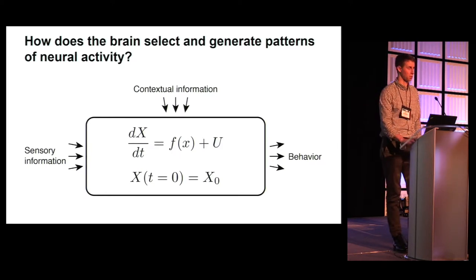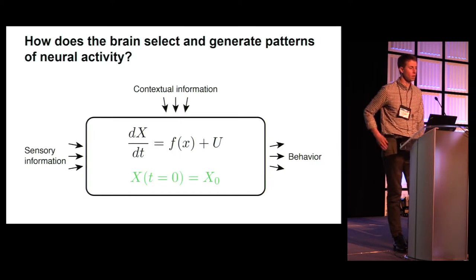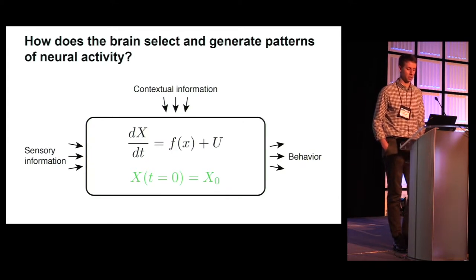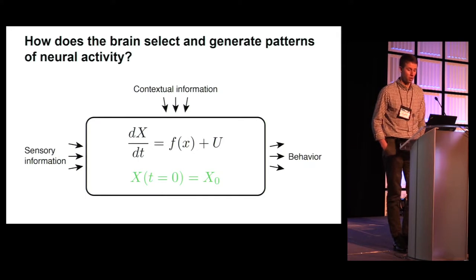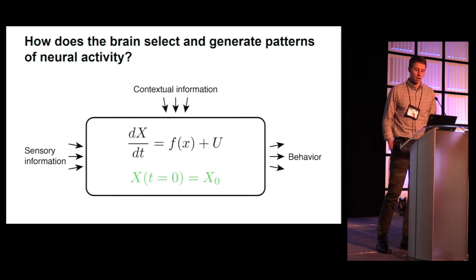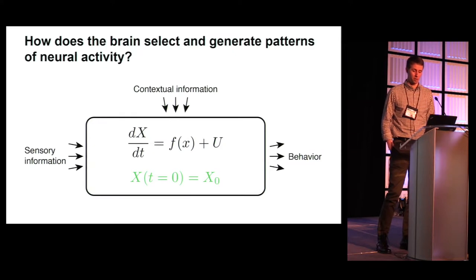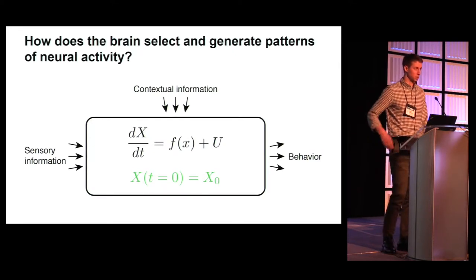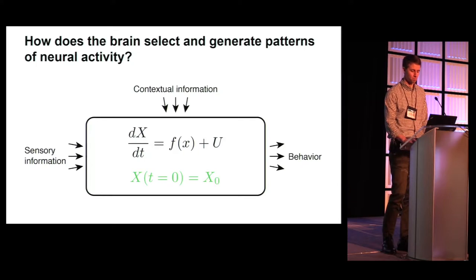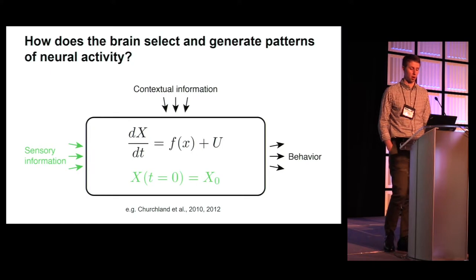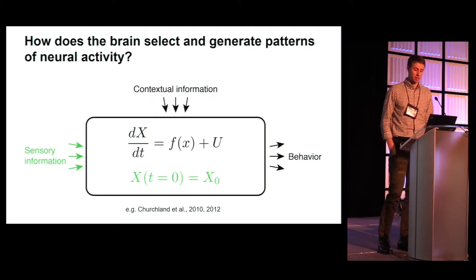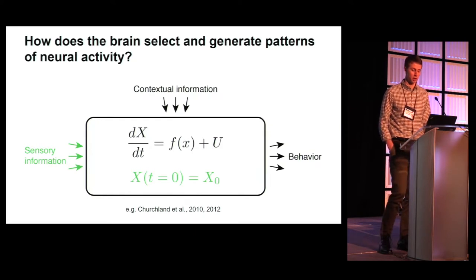Dynamical systems are controlled by three mechanisms. One control mechanism is the initial conditions of the system. This is the state of the system at time zero or before the dynamics begin evolving. Adjusting the initial conditions in a neural circuit would allow the system to explore different regions of neural state space. In many behaviors in which sensory input is discrete and occurs prior to motor behavior, it is natural to consider the effects of sensory information as setting initial conditions, for example, as has been done in previous work in the motor cortex by Mark Churchland and colleagues.